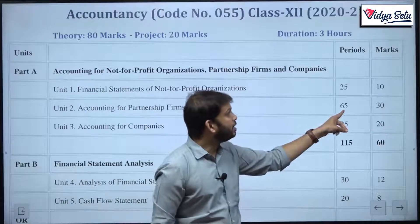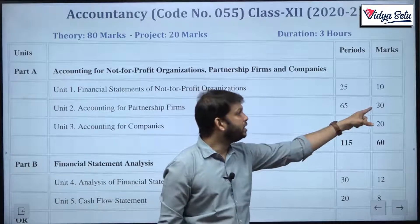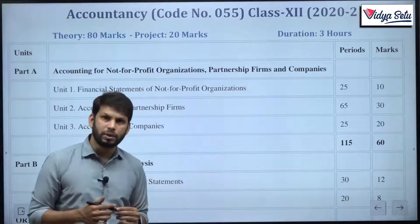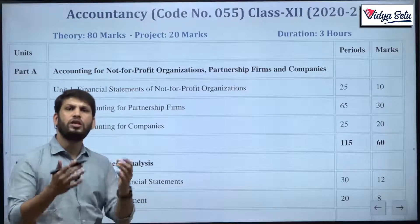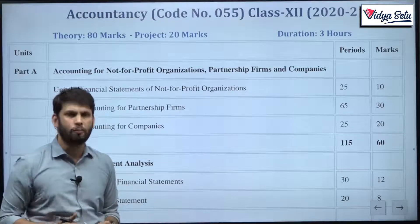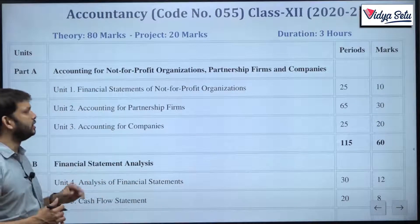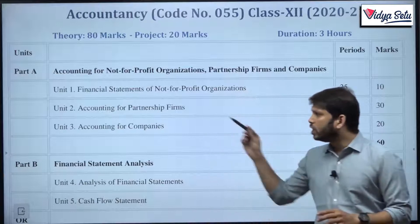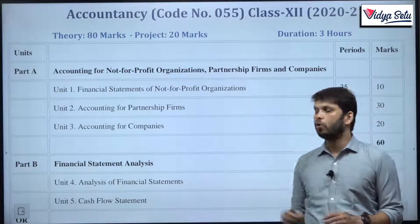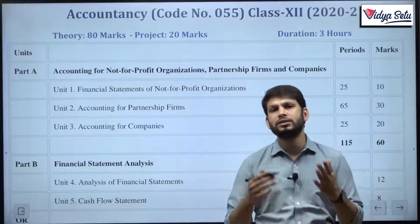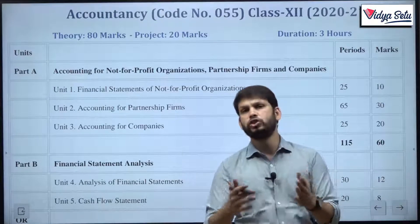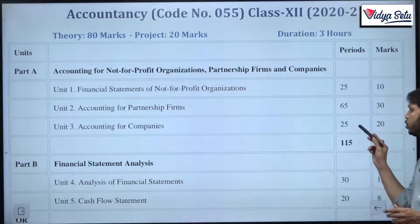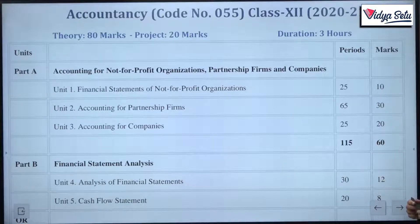CBSE allots 25 periods for the not-for-profit unit and the board marking weightage is 10 marks — a very simple chapter. Next comes our favorite unit: accounting for partnership firms. The allotted lectures are 65, the highest, and the board weightage is also the highest at 30 marks. You will see various chapters: basic concepts, admission of partner, retirement of partner, death of partner, and dissolution of partnership firm. The third unit is accounting for companies — how we issue shares and debentures, redemption, and everything. The periods allotted are 25 and the board weightage is 20 marks.